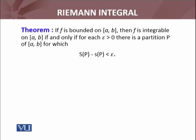then F is integrable on [a, b] if and only if for each epsilon greater than zero there is a partition P of [a, b] for which the Riemann upper sum minus the Riemann lower sum is less than epsilon. For every epsilon greater than zero, a function F is integrable if there exists a partition P on [a, b] such that this inequality holds.